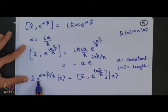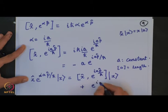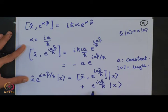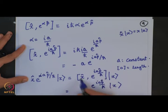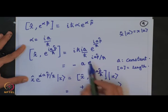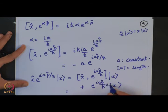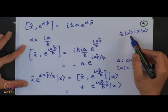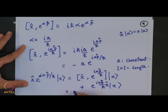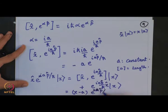Now we have the commutation relation. If I write x̂ operating on e^(iap̂/ℏ)|x⟩, I can express this using the commutator: x̂·e^(iap̂/ℏ)|x⟩ = [x̂, e^(iap̂/ℏ)]|x⟩ + e^(iap̂/ℏ)·x̂|x⟩. This commutator gives −a·e^(iap̂/ℏ) and operating x̂ on |x⟩ gives x.